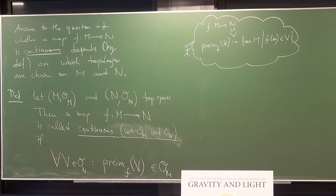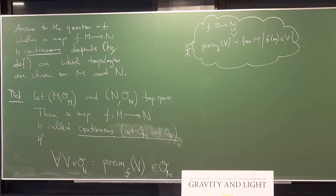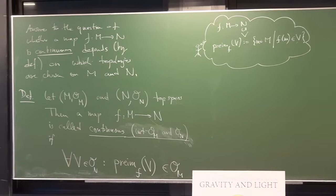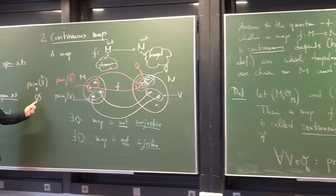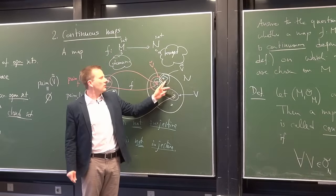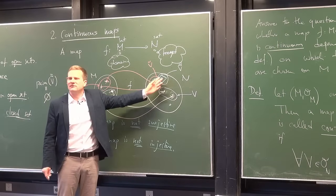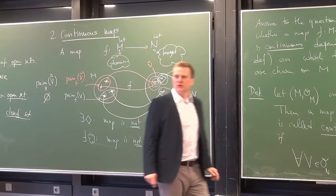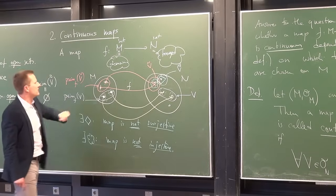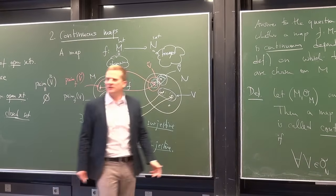A student asks: if a point in the target is not hit by any element of the domain, what is its pre-image? The pre-image of a singleton consisting only of that unhit point is the empty set. And the empty set is open. So this wouldn't destroy continuity — which also shows why it's important to have the empty set in the topology; otherwise only surjective maps could be continuous.